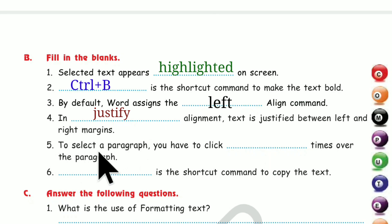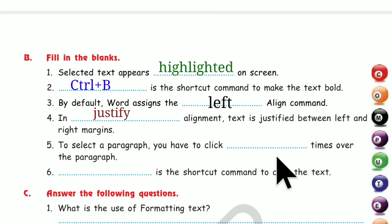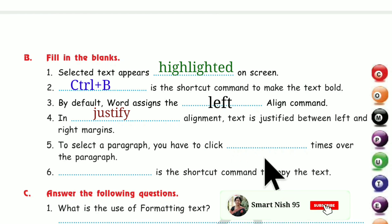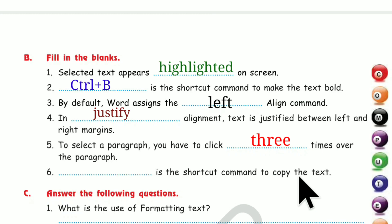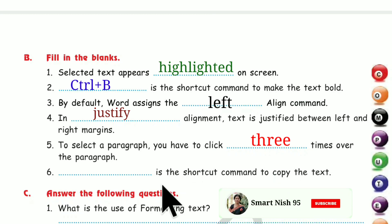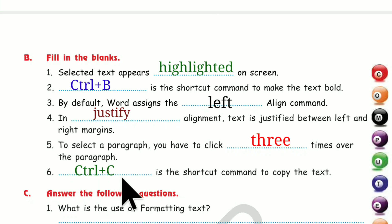Number 5. To select a paragraph, you have to click three times over the paragraph. And Control + C is the shortcut command to copy the text.